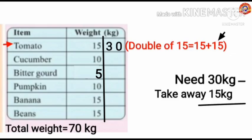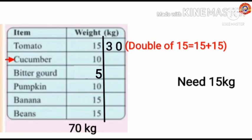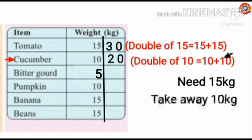We need only 30 more kilograms to make a quintal. We take away 15 kilograms, so how much more is needed? Subtract 15 from 30: 30 minus 15 equals 15 kilograms. Next, take cucumber — its weight is 10 kilograms. Double of 10 is 10 plus 10 equals 20 kilograms. We now need only 15 kilograms more to make a quintal; we take away 10 kilograms, leaving 15 minus 10 equals 5 kilograms still needed.